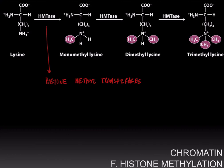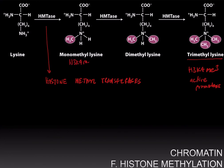For example, H3K4me3 — trimethylation at the fourth lysine of the histone H3 tail — is associated with active promoters. H3K4me1 — monomethylation at the fourth lysine — is associated with active enhancers.